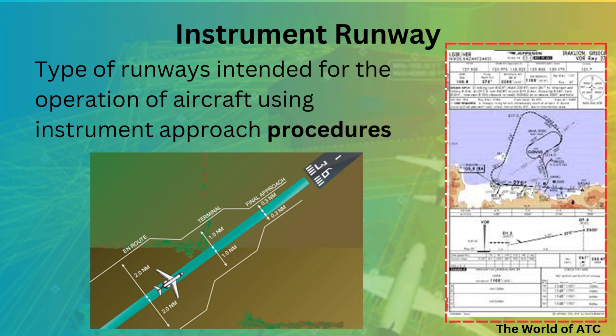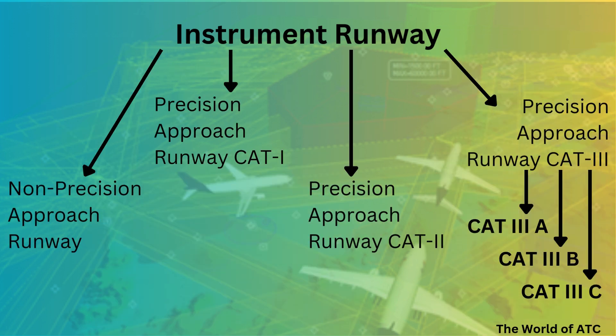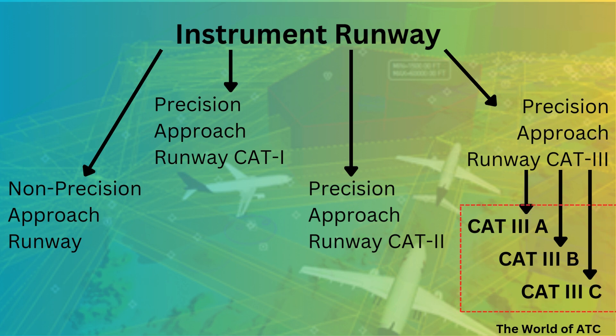We can generally categorize instrument runways into four different categories. It could be a non-precision approach runway, a precision approach runway CAT-1, CAT-2, or CAT-3. In precision approach runway CAT-3 there are again three different categories: CAT-3-Alpha, 3-Bravo, and 3-Charlie.